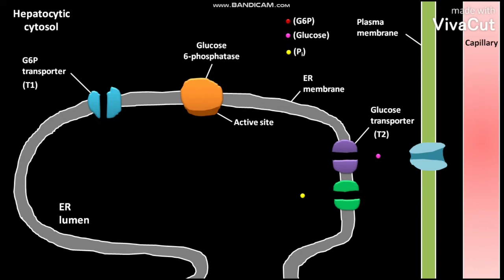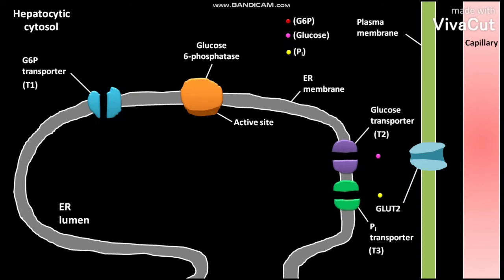The ER membrane also contains a Pi transporter (T3). The Pi present in the ER lumen is then transported to the cytosol by T3. The plasma membrane of the hepatocyte contains glucose transporter GLUT2. The cytosolic glucose is then transported to the capillary by GLUT2.